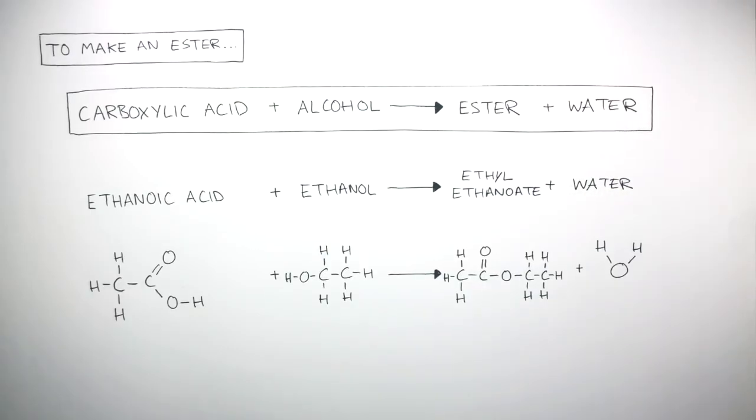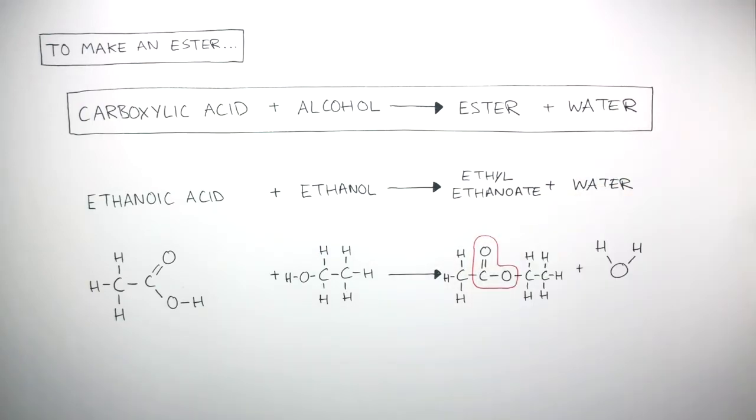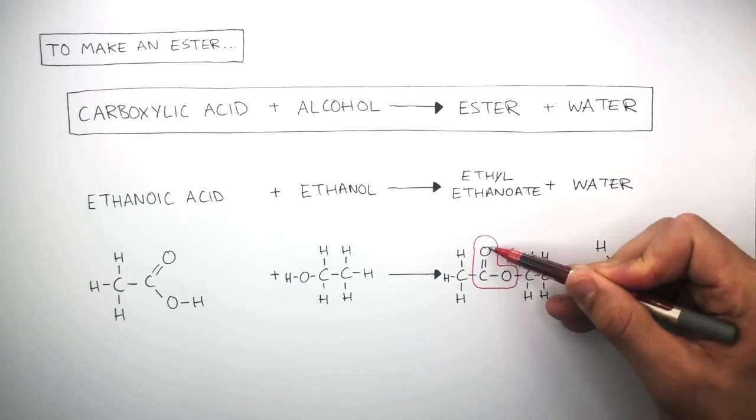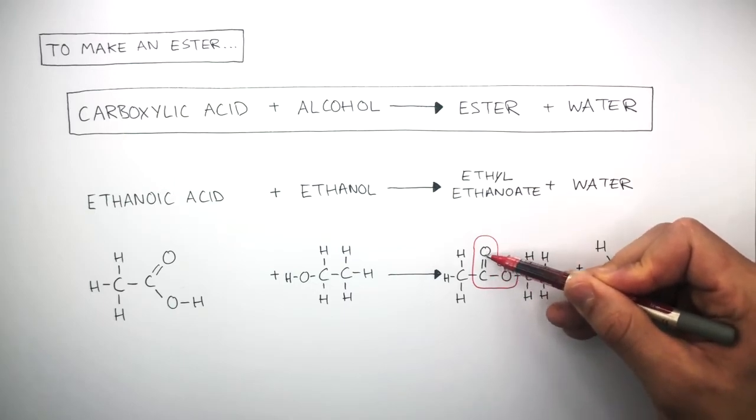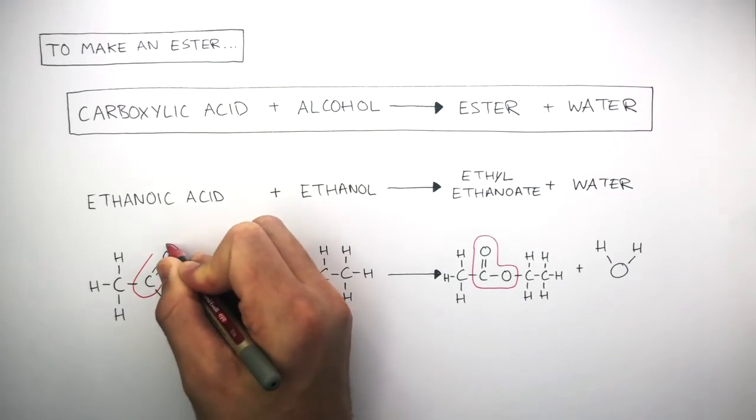These are the displayed formulae of the reactants and products and focusing on ethyl ethanoate, we can see the COO bond right here is the ester link. We can see the double bond between the carbon and oxygen atom is from the carboxylic acid on this ethanoic acid molecule.